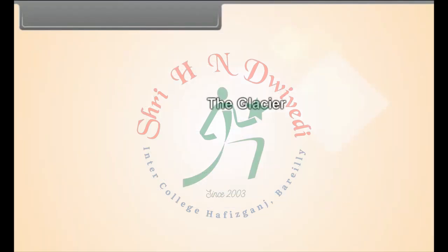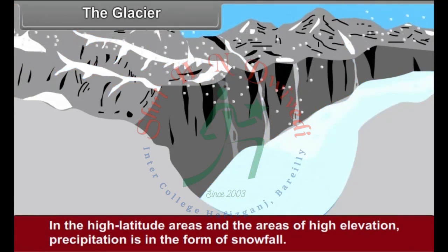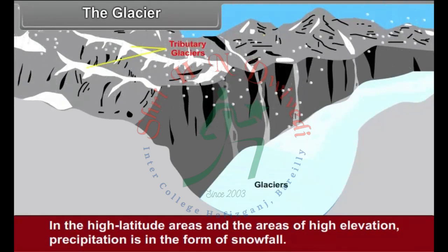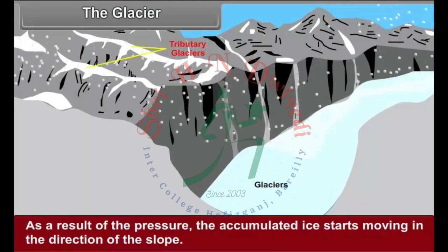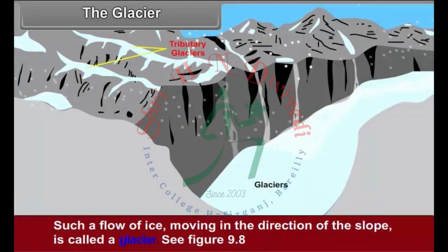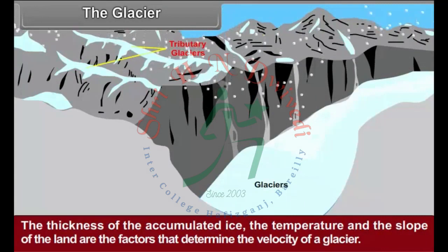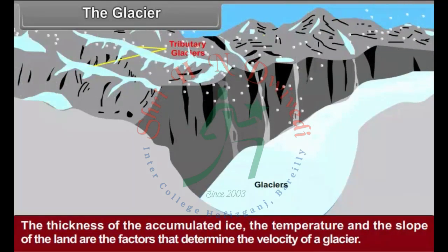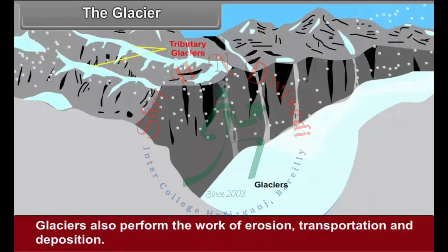The Glacier: In high latitude areas and areas of high elevation, precipitation is in the form of snowfall. Over a period of time, the accumulated snow turns into ice. As a result of pressure, the accumulated ice starts moving in the direction of the slope. Such a flow of ice moving in the direction of the slope is called a glacier. See figure 9.8. As the ice moving in a glacier is in the solid state, its velocity is very low. The thickness of the accumulated ice, the temperature and the slope of the land are the factors that determine the velocity of a glacier. Glaciers also perform the work of erosion, transportation and deposition.